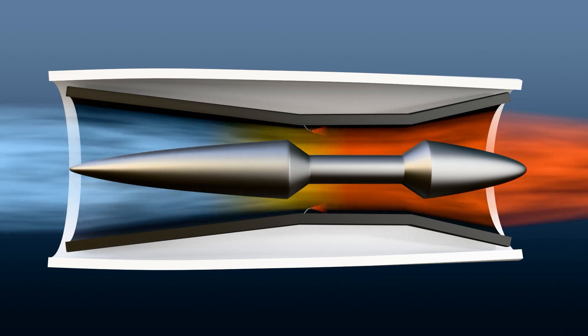Despite their promise, scramjets face challenges. They operate at extremely high temperatures, which can damage their structure. Researchers are working on new materials and designs to resist these conditions. Also, scramjet technology is still experimental, and there are many obstacles to overcome before they can become widely used.